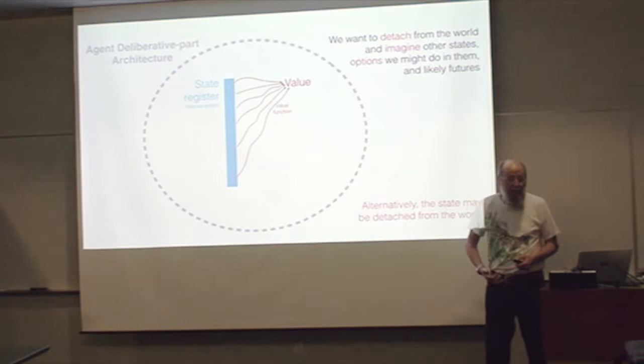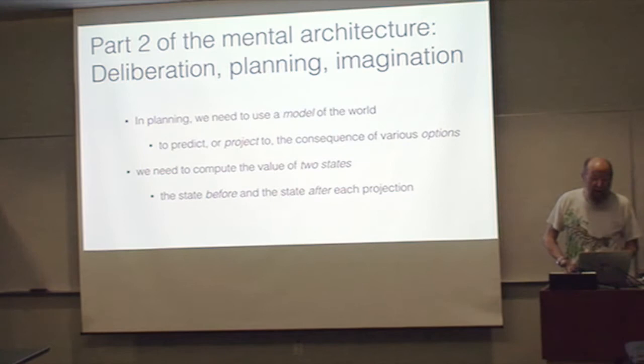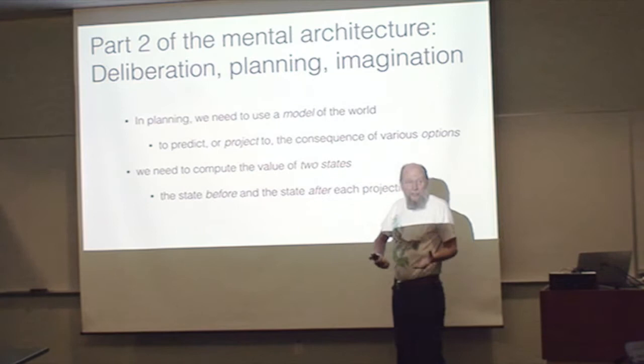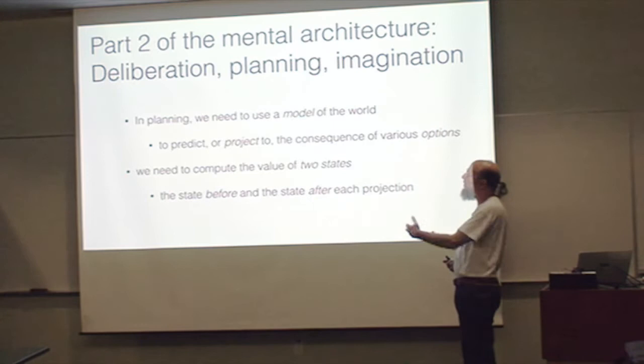We want to detach from the world and imagine other places we might be and other things we might do and what are the consequences of those likely things in the future. This is part two of the mental architecture, the more deliberative part. We do planning and imagination. We need a model of the world to predict what will happen, to imagine what will happen in various situations. I'm going to talk about projection - where we project to that possible future.